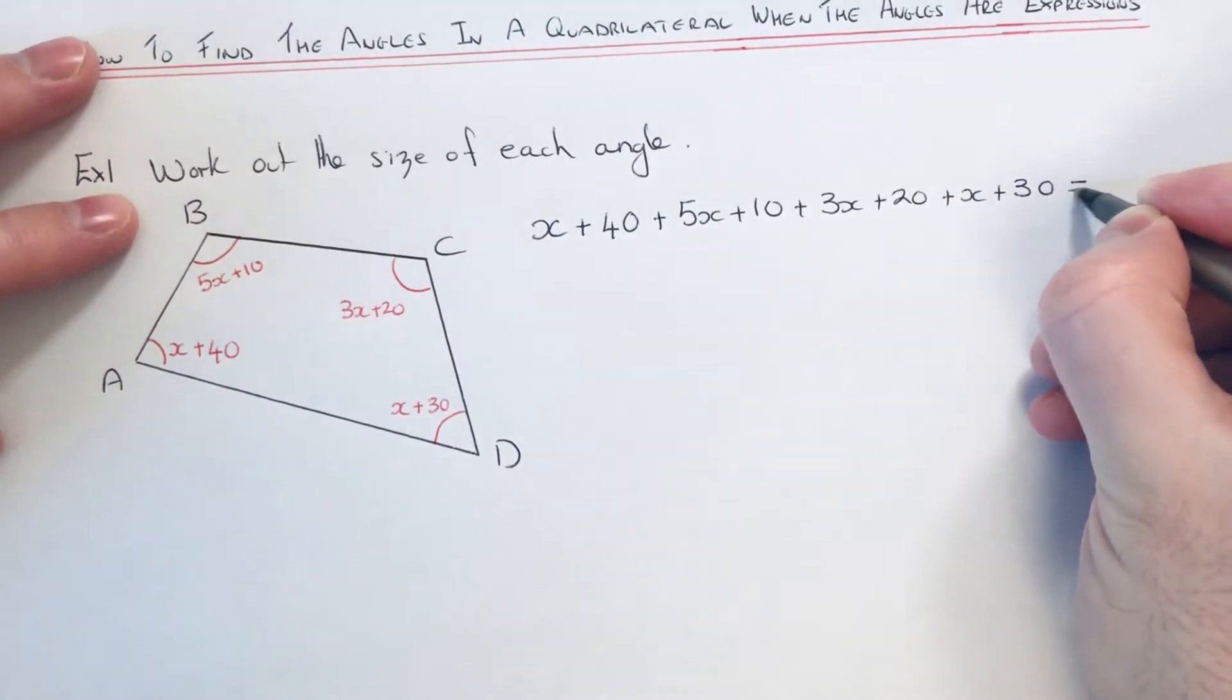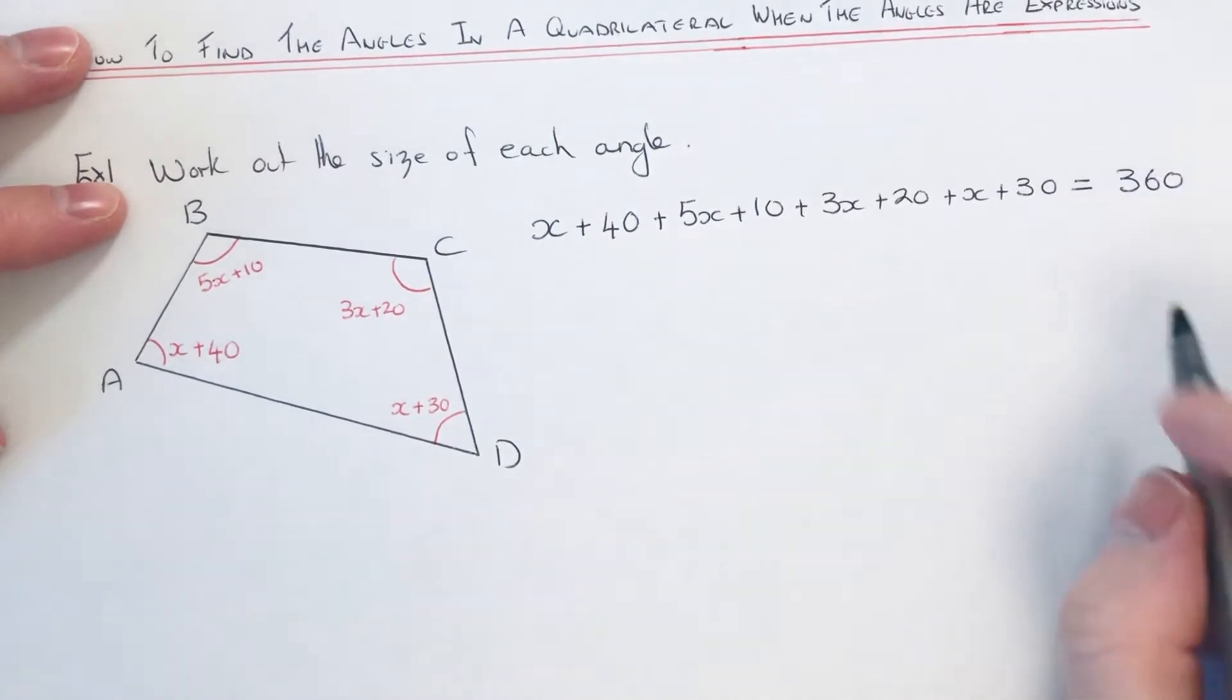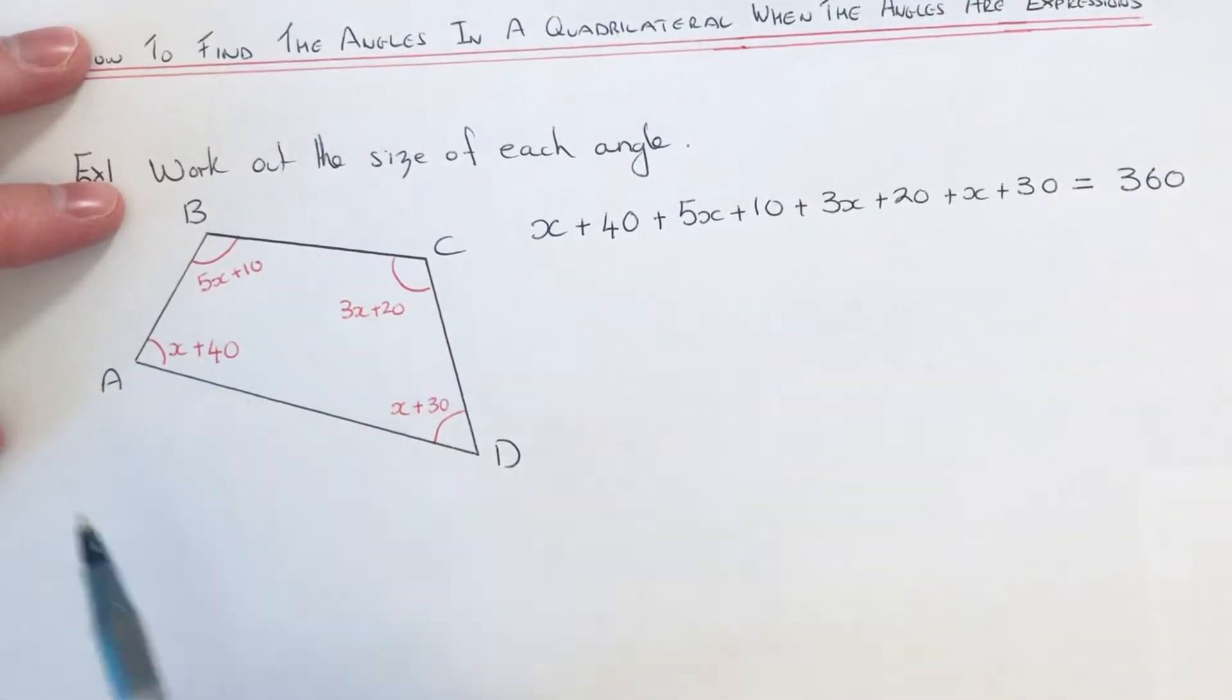And we're going to make this equal to 360. This is because angles in a quadrilateral add up to 360.